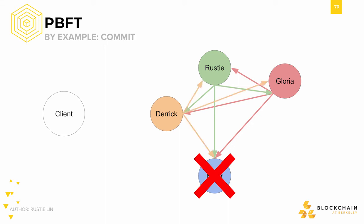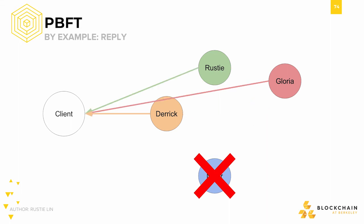After nodes have prepared, they send out a commit message. If a node receives F plus 1 valid commit messages, then they carry out the client request and send out the reply to the client. The client waits for F plus 1 of the same reply. Since we allow for at most F faults, we need to wait for at least F plus 1, and this ensures the response to be valid.